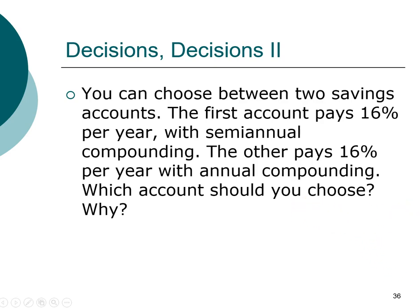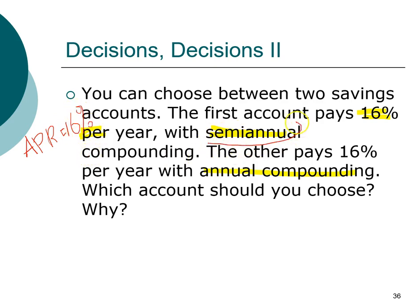In this first example, we're looking at an investment with the same APR of 16%. When it says 16% per year, that's the APR. The first investment has semi-annual compounding; the second has annual compounding. The question is which account should you choose and why? For the first account, the APR is 16%, but the EAR will be different. With semi-annual compounding, the compounding frequency is two times per year, so M is 2.